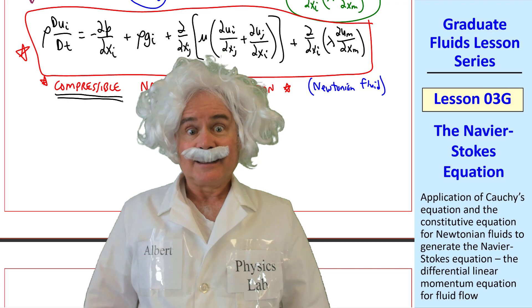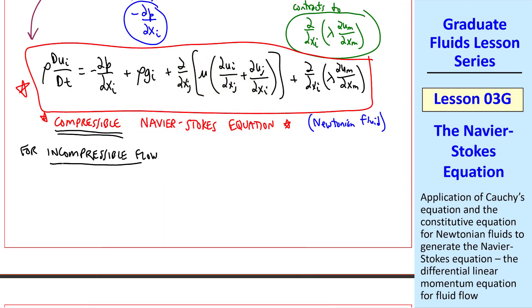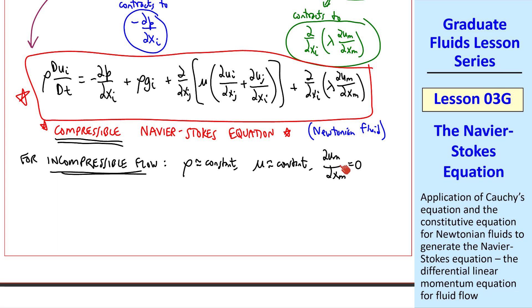This is the general compressible form. For incompressible flow, we assume that rho is approximately constant, mu is approximately constant, and del um del xm is zero, which is the incompressible form of the continuity equation. Since this appears here, the term with lambda will drop out, and since mu is a constant, it can come outside the derivative.